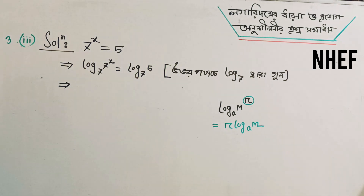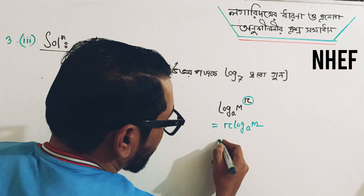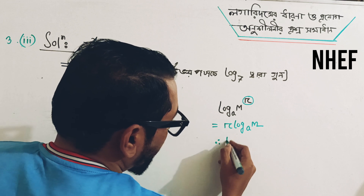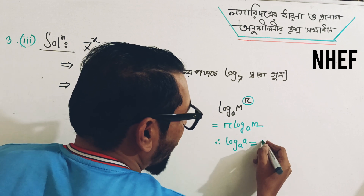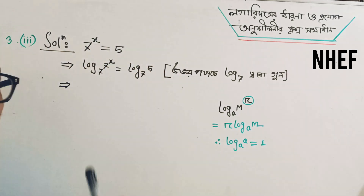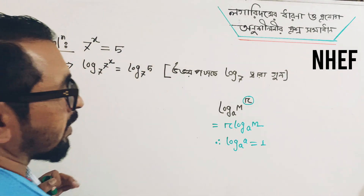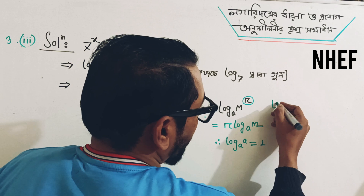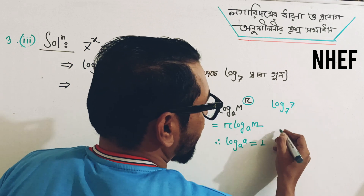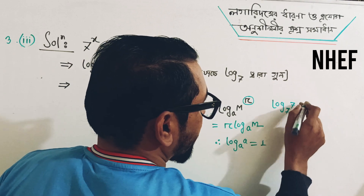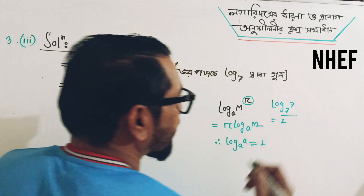It's 100%. The reason we have to do that is log a base a, which means the value is 1. So log base 7 with base 7 gives us 1, meaning it is the same — log base 7 of 7 equals 1.